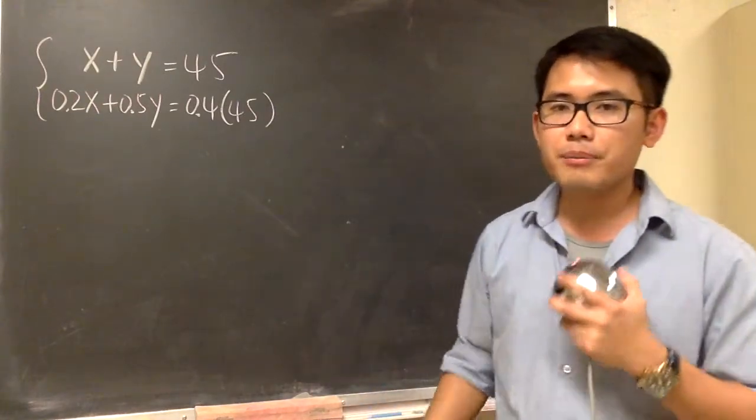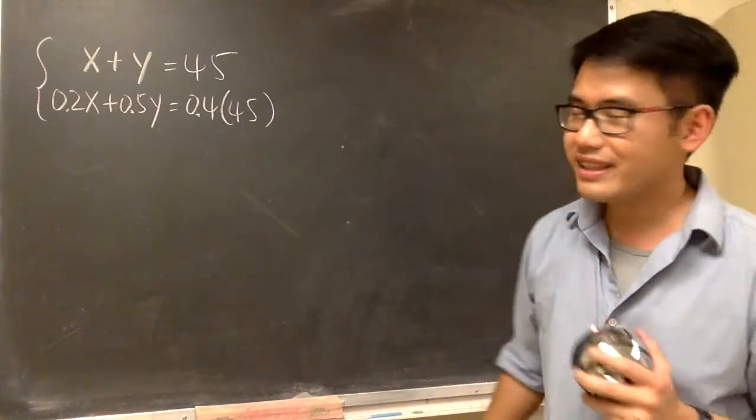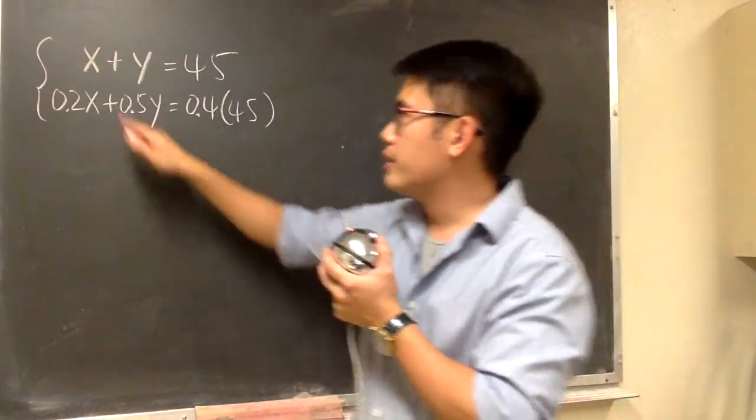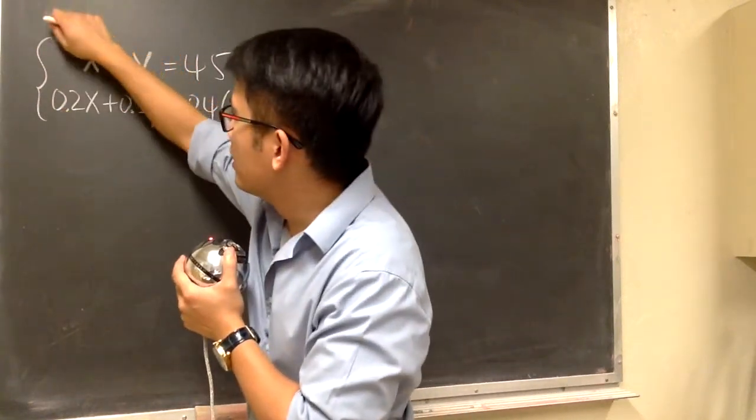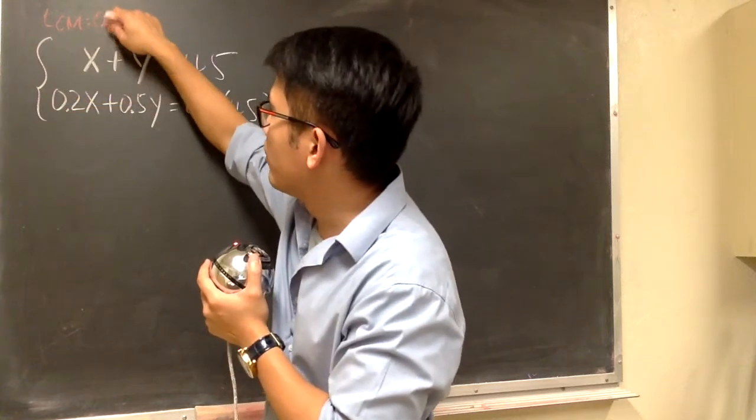Let's use the elimination method, because in my opinion, about 90% of the time, it will be quicker. And let's get rid of the x. So, this is 1 and this is 0.2. On top of this right here, we have to get the lowest common multiple to be 0.2.